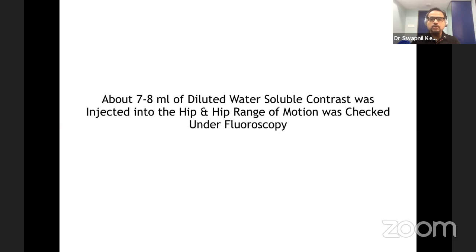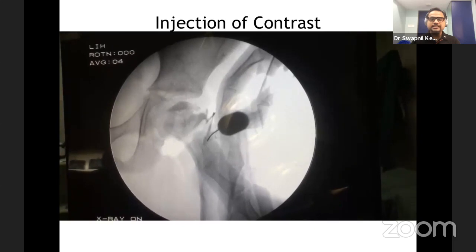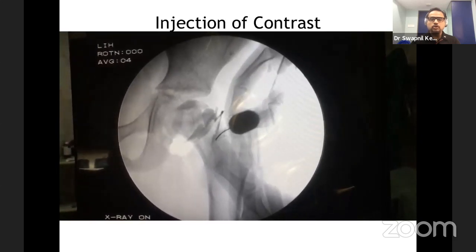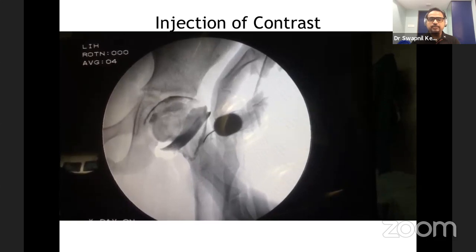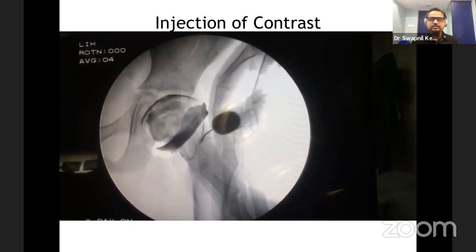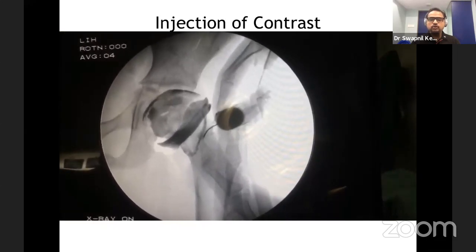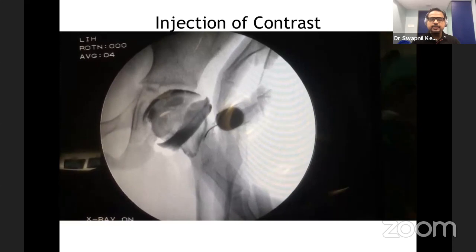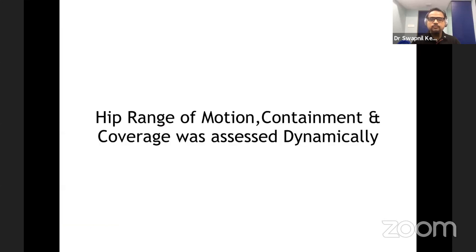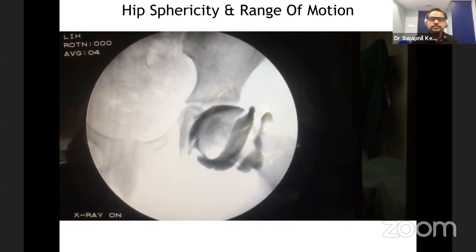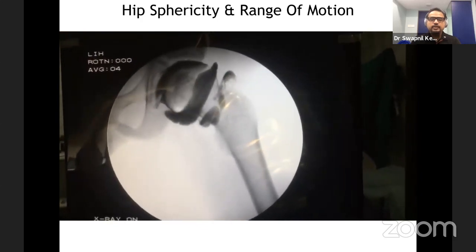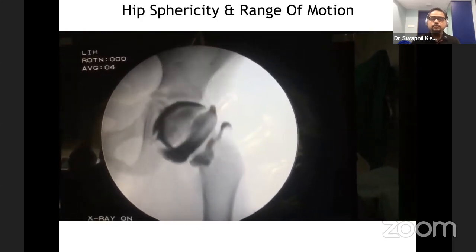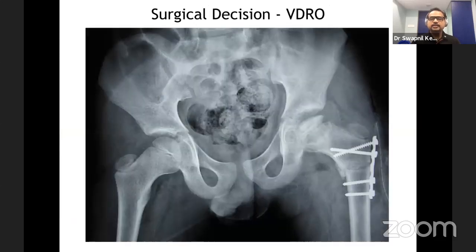Once the air arthrogram confirms intracapsular position, about seven to eight ml of water-soluble contrast is injected. The contrast can be seen lining the capital femoral epiphysis, clearly showing a spherical epiphysis. The hip is then put through the range of motion to see the lateral and posterior parts. If the hip can be contained with good coverage through the full range of motion, it is confirmed as a containable hip. For this Herring B, Elizabethtown 1b case, the treatment decision was a varus derotation osteotomy.